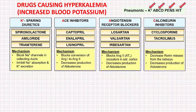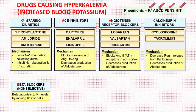The next class includes non-selective beta blockers. Beta-2 agonists act on beta-2 receptors and move potassium into the cells. Therefore, beta blockers — especially the non-selective ones acting on both beta-1 and beta-2 receptors — decrease potassium movement into the cells, raising extracellular potassium and potentially causing hyperkalemia.